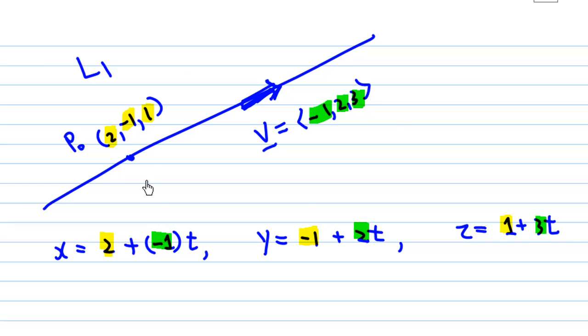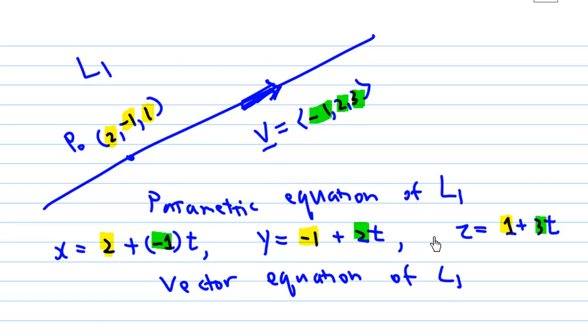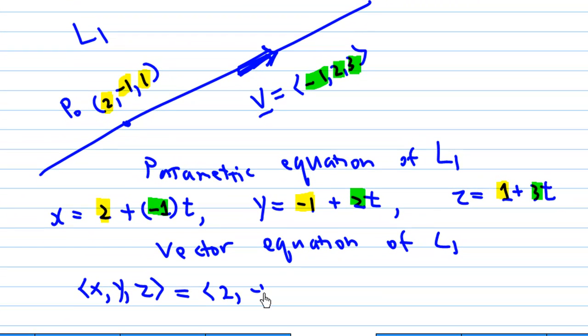There's also a vector equation we need to find, which is (x, y, z) = (2, -1, 1) + t(-1, 2, 3).